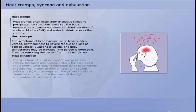The symptoms of heat syncope range from sudden vertigo, lightheadedness to severe fatigue and loss of consciousness. Sweating is visible and body temperature may be elevated. The person is often pale. Treat by removing the person from the heat to rest.